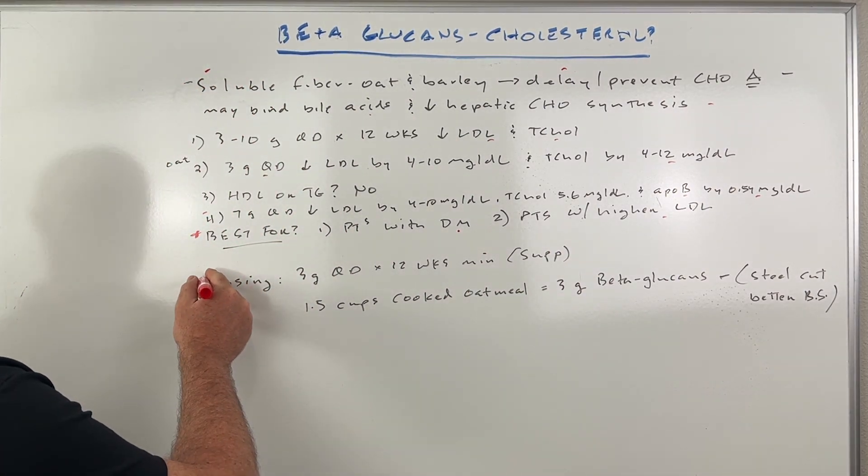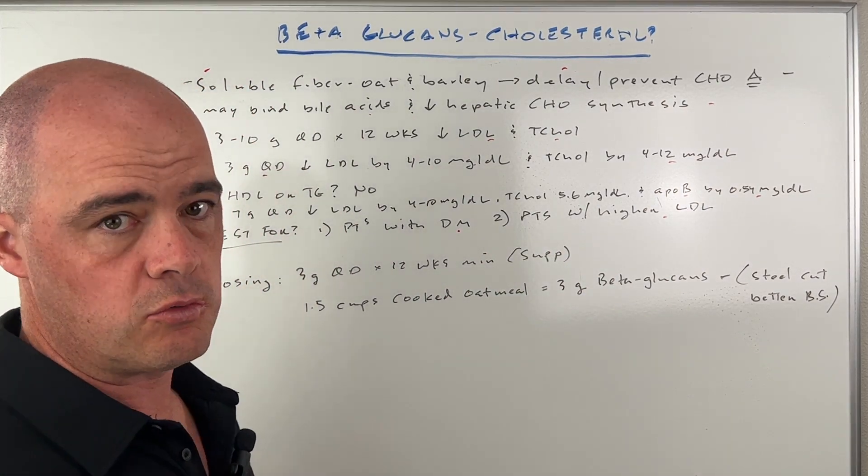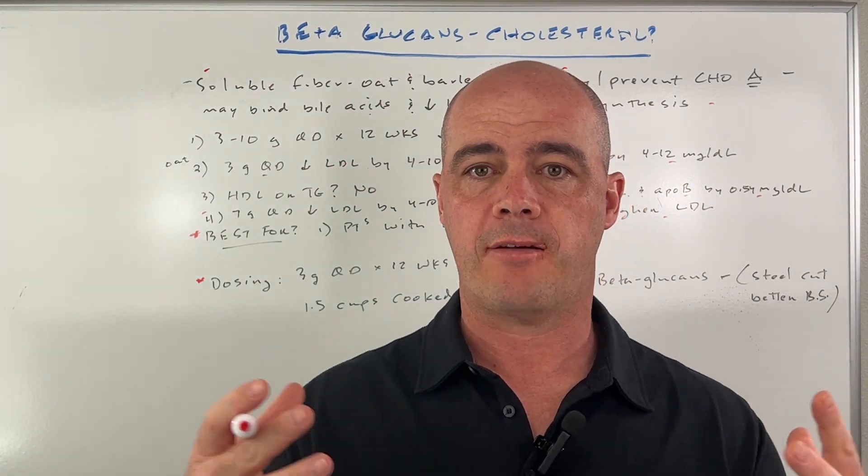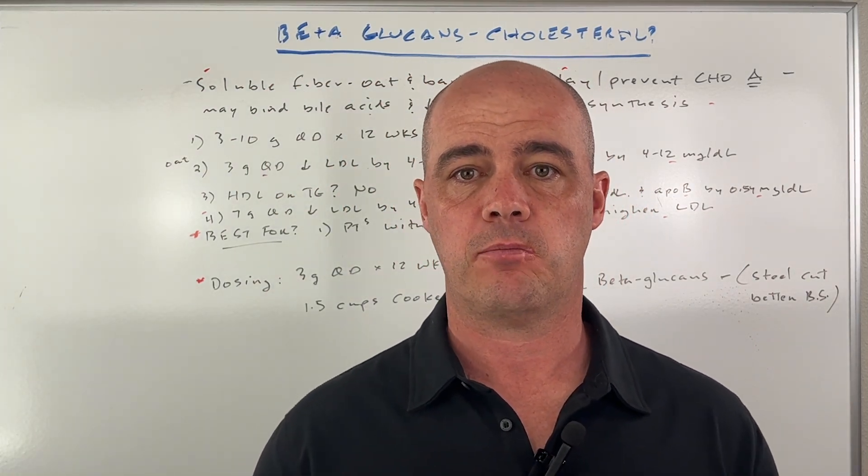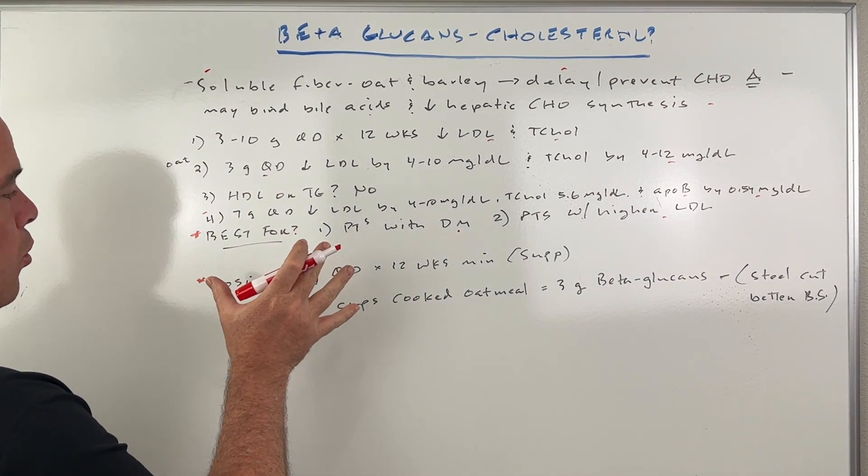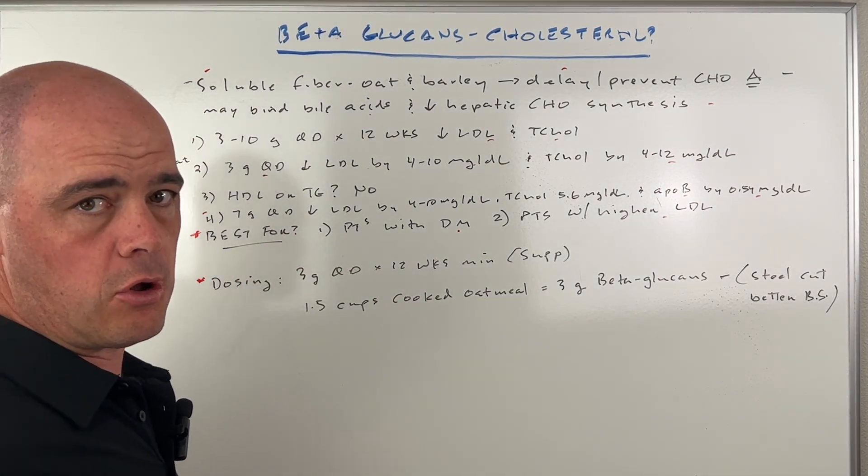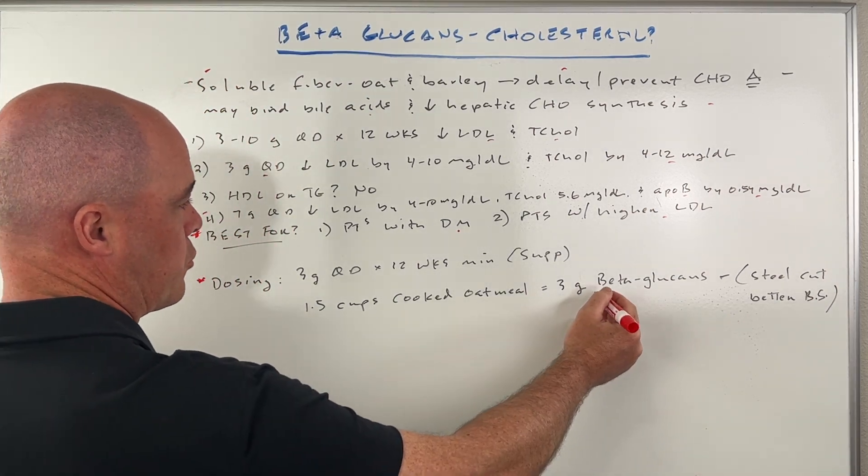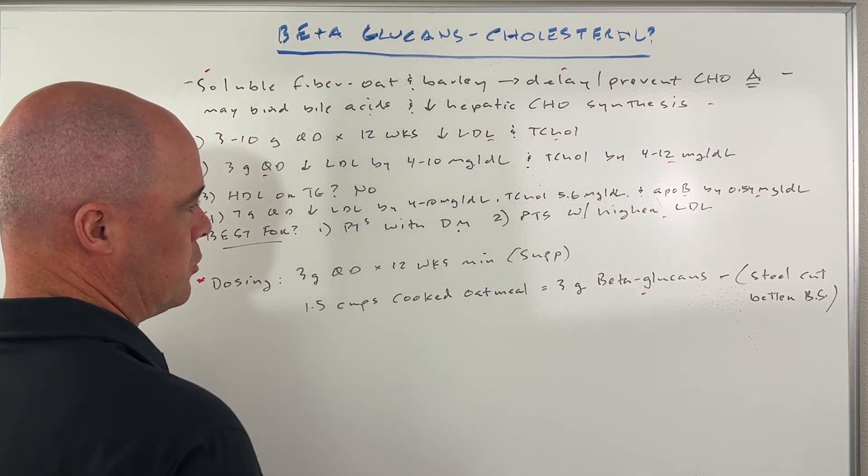Now, another question is what about just having oatmeal every day? Is that the same thing? And what we know is, yeah, it can be equivalent because one and a half cups of cooked oatmeal is going to give you around three grams of beta glucan.